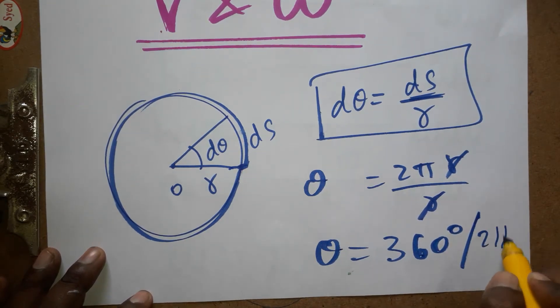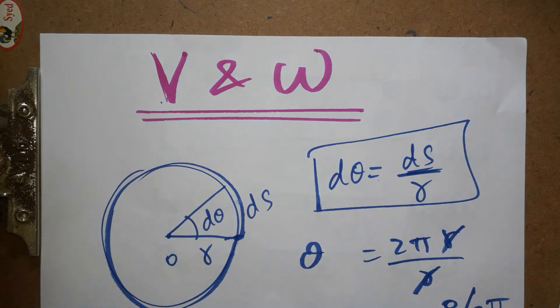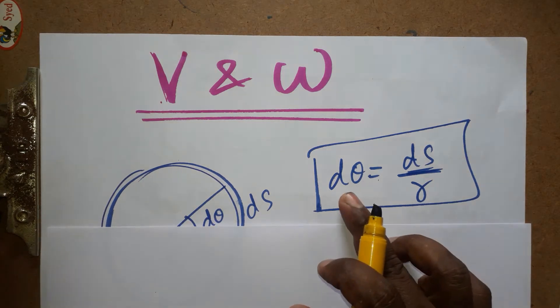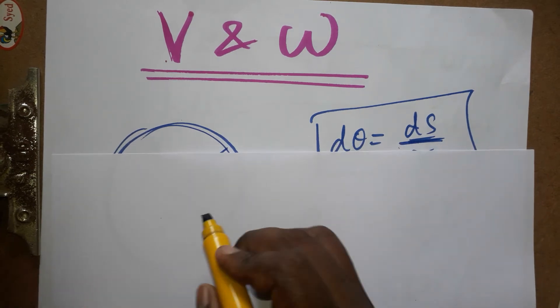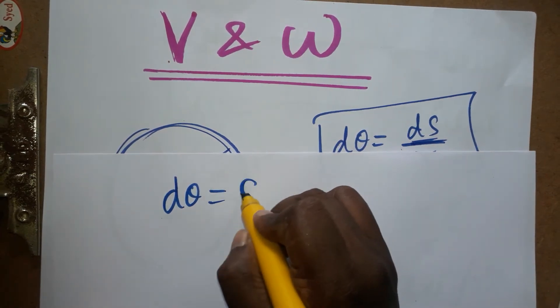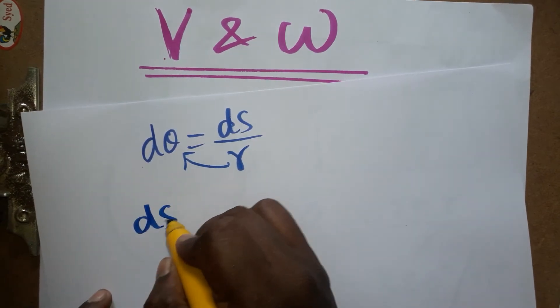The same way I am going to prove v and ω relation. We know already dθ = ds/r, this equation is correct. So now dθ = ds/r, taking r to this side, so ds = dθ·r.